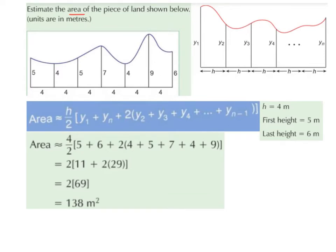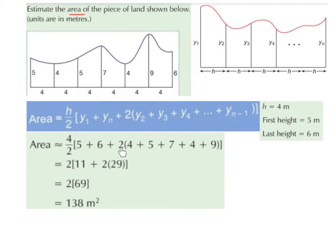So it's going to be 2 multiplied by 4 plus 5 plus 7 plus 4 plus 9. The h is equal to 4 — that's what each of the widths was. The first height y1 is 5, the last height yn is 6, and then it's 2 times all the in-between values: 4, 5, 7, 4, and 9.